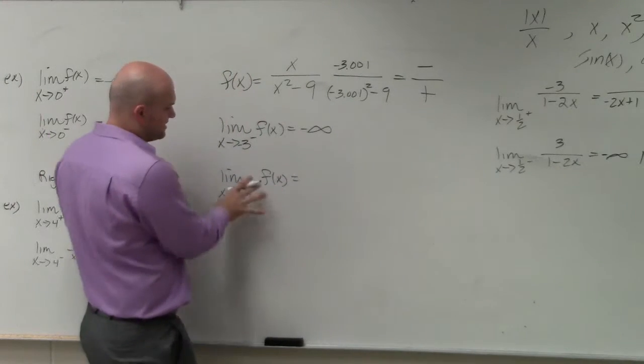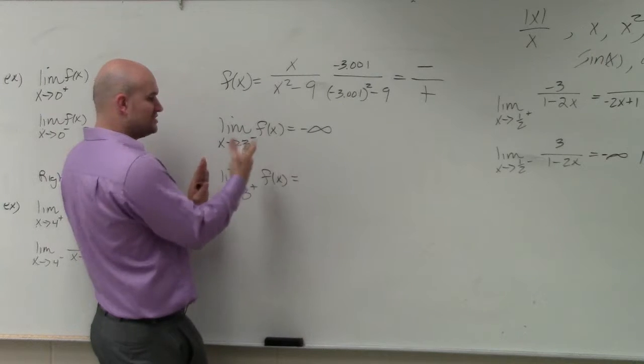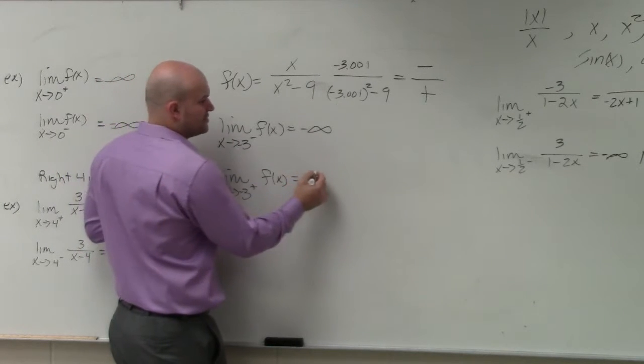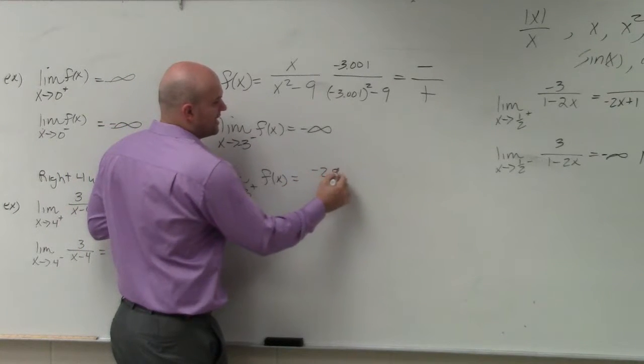If you look at from the positive side, let's choose a value that's just to the right of negative 3. So negative 2.999.